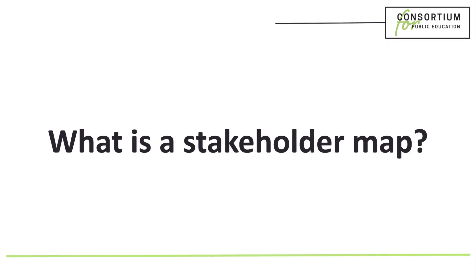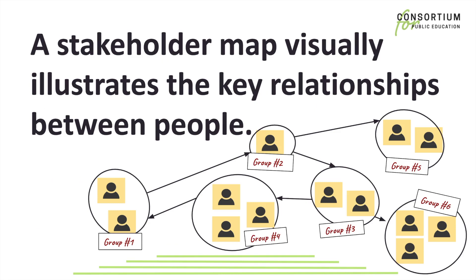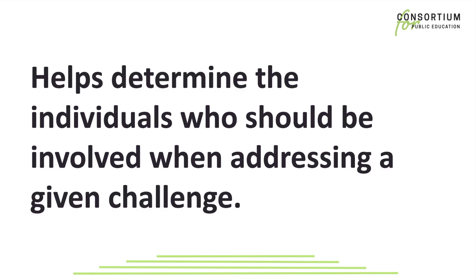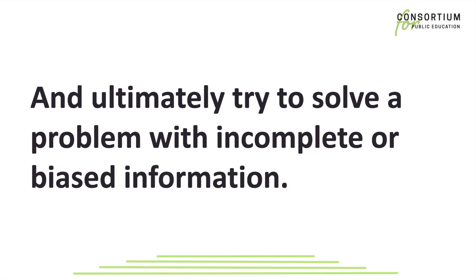What is a stakeholder map? A stakeholder map is a method for identifying, organizing, and understanding the role of individuals and groups within a system or community. A stakeholder map visually illustrates the key relationships between people. Visualizing who is involved helps determine the individuals who should be involved when addressing a given challenge. Otherwise, we may make assumptions, ignore valuable input, and ultimately try to solve a problem with incomplete or biased information.